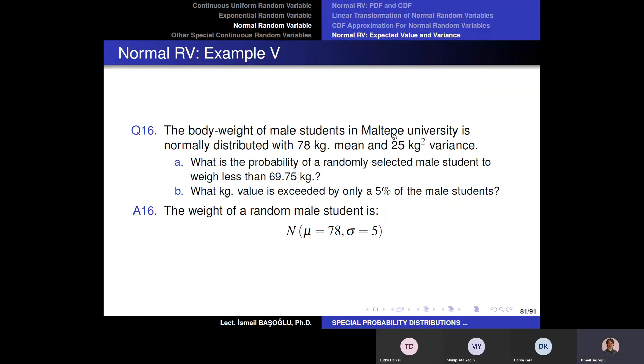The body weight of male students in Ozyen University is normally distributed with 78 kilograms mean and 25 kilograms square variance.